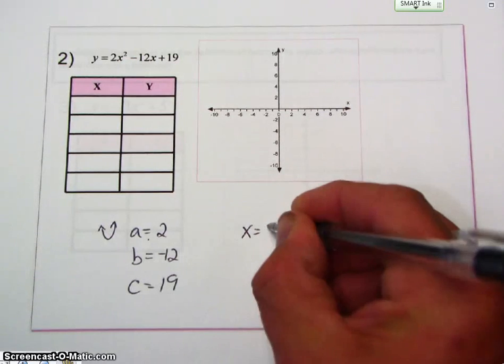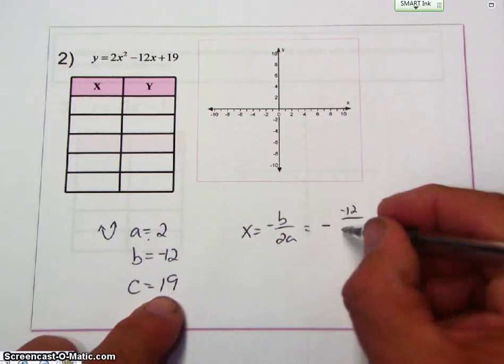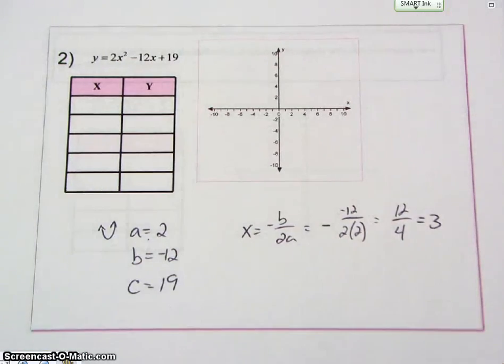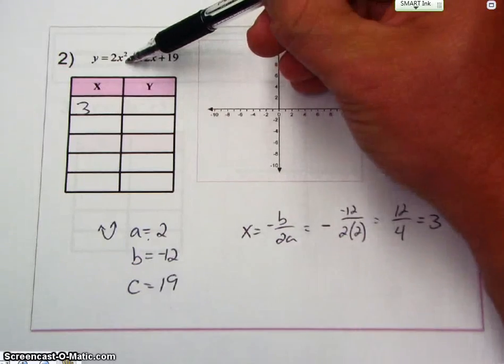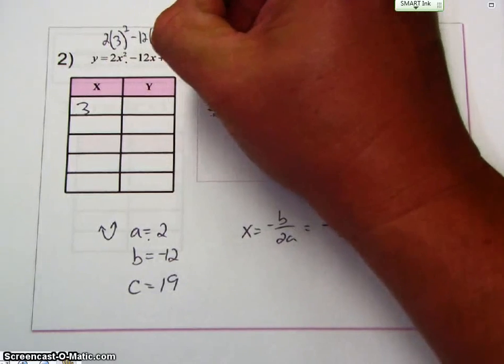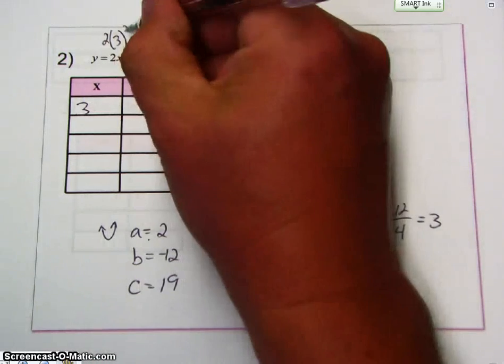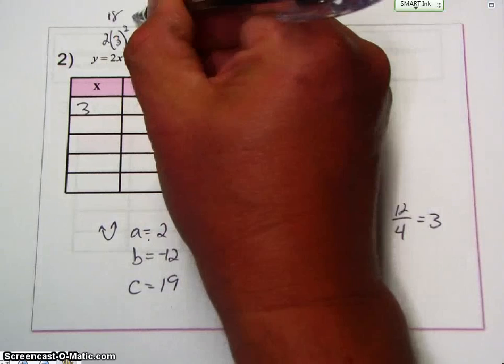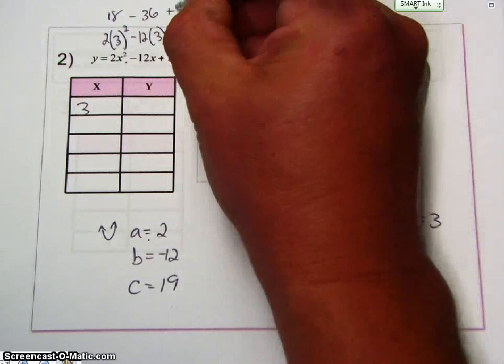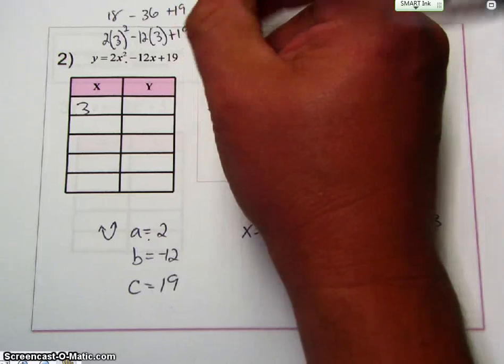So X is equal to negative B over 2A. So negative B is negative 12 over 2 times 2. So that's positive 12 over 4. 12 divided by 4 is 3. So now I'm going to plug 3 in here. So I get 2 times 3 quantity squared minus 12 times 3 plus 19. So this is 9, 9 times 2 is 18, 12 times 3 is 36, and plus 19. So I do 18 minus 36 plus 19 is 1.